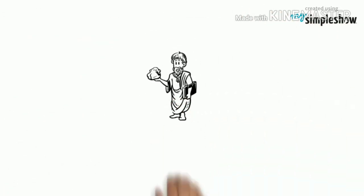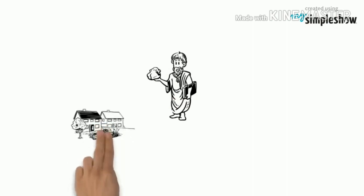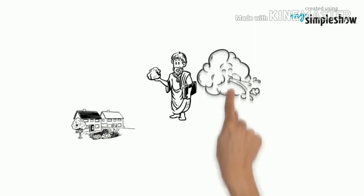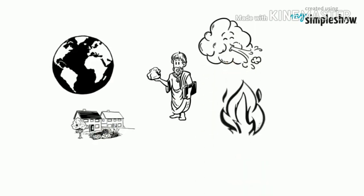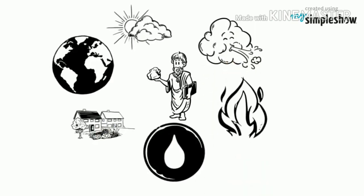Ancient Indian philosophers said that all matter — living or non-living — was made up of five basic elements: air, earth, fire, sky, and water.